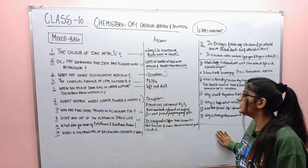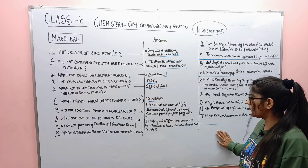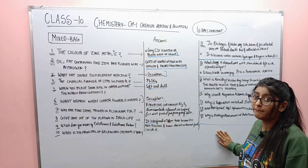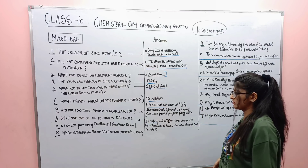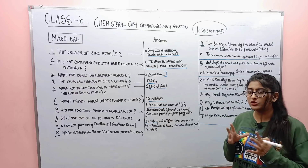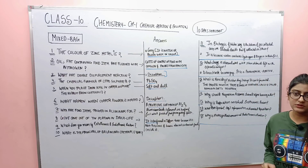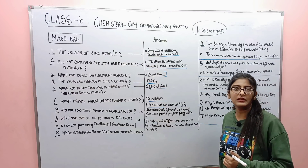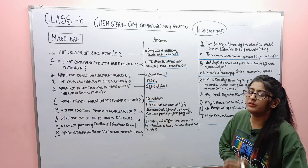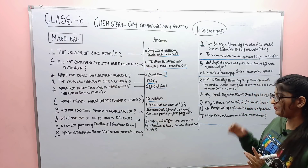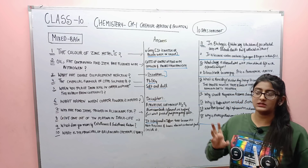Next question: why are food items packed in aluminum foil? A protective coat of aluminum oxide is formed on the surface of the foil, which protects the food from getting spoiled. When we pack food in aluminum foil, the protective coat of aluminum oxide acts as a barrier.